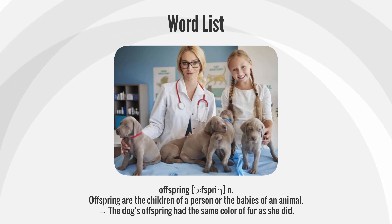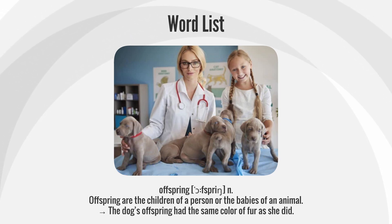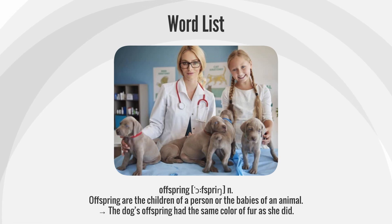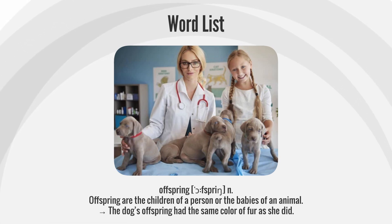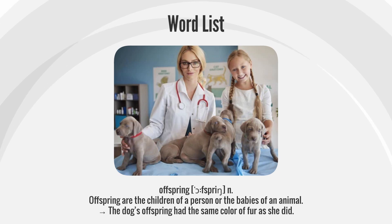Offspring. Offspring are the children of a person or the babies of an animal. The dog's offspring had the same color of fur as she did.